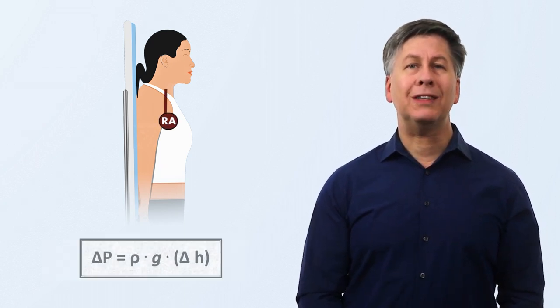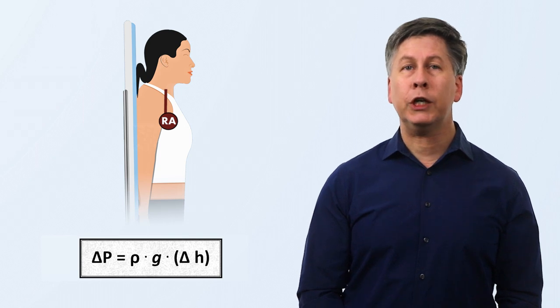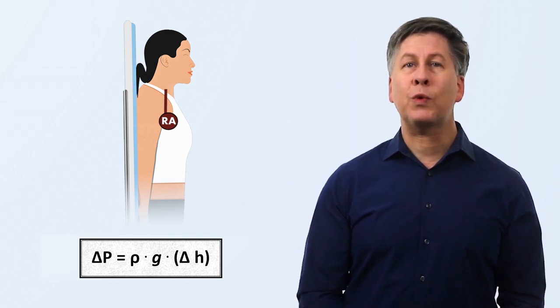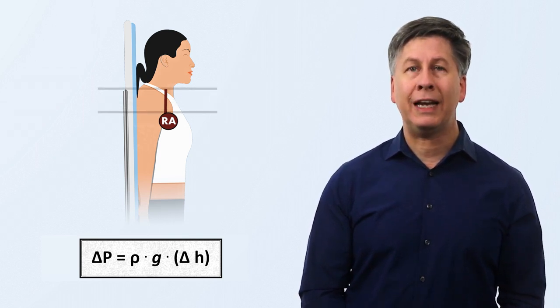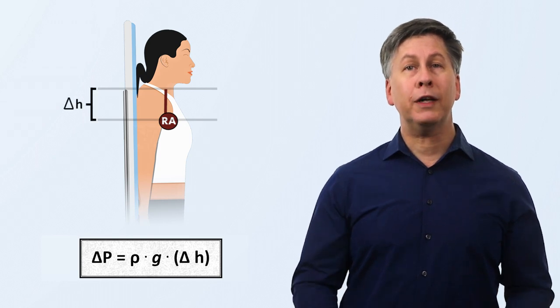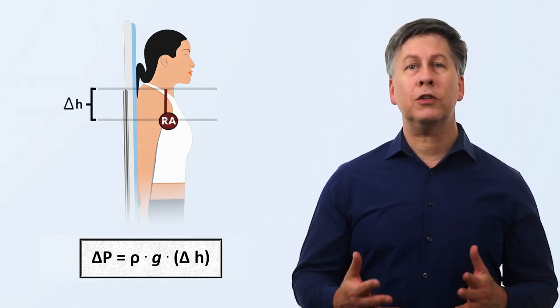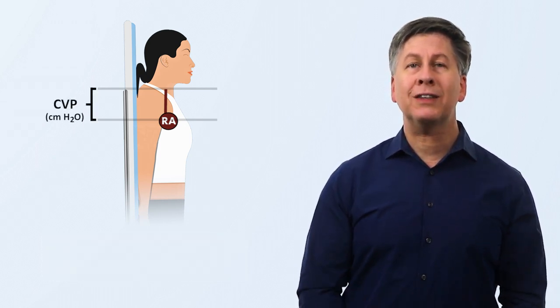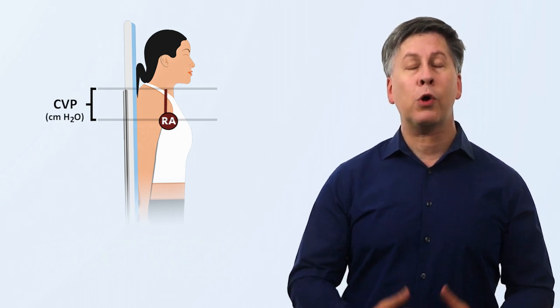For example, suppose a patient is fully upright at 90 degrees, and the jugular venous pressure extends to this level. We can say that the central venous pressure is equal to the density of blood times the little g times the vertical distance between that level and the level of the right atrium. And to simplify units, we use units of centimeters of water using the fact that the density of water and blood are approximately the same.